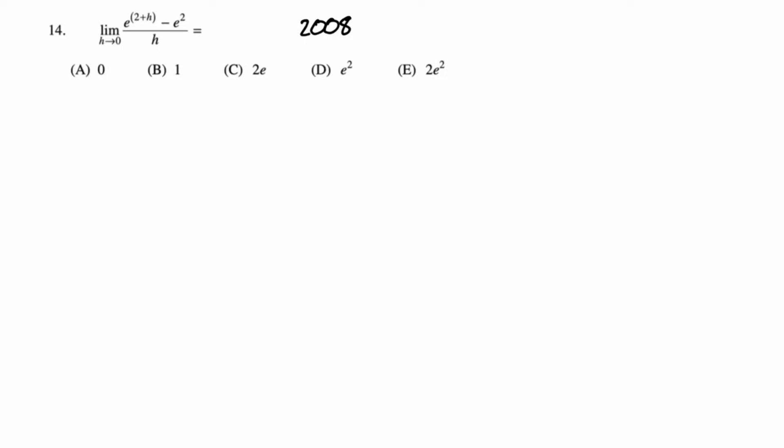Next: the limit as h approaches zero of e to the two plus h minus e squared, all over h. The trigger is h approaches zero — definition of the derivative. The function is clearly e to the x, whose derivative is also e to the x. We're plugging in two, so f prime of two is e squared — that's option d.